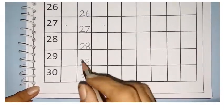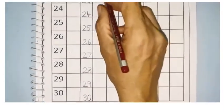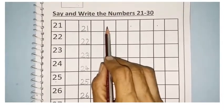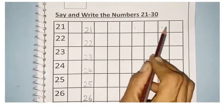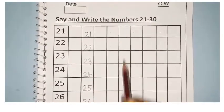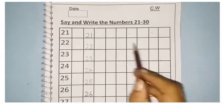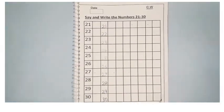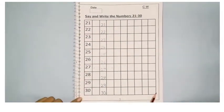Then leave one column and write in the next. Dots are given here, leave the columns. Okay children, complete till here. Thank you.